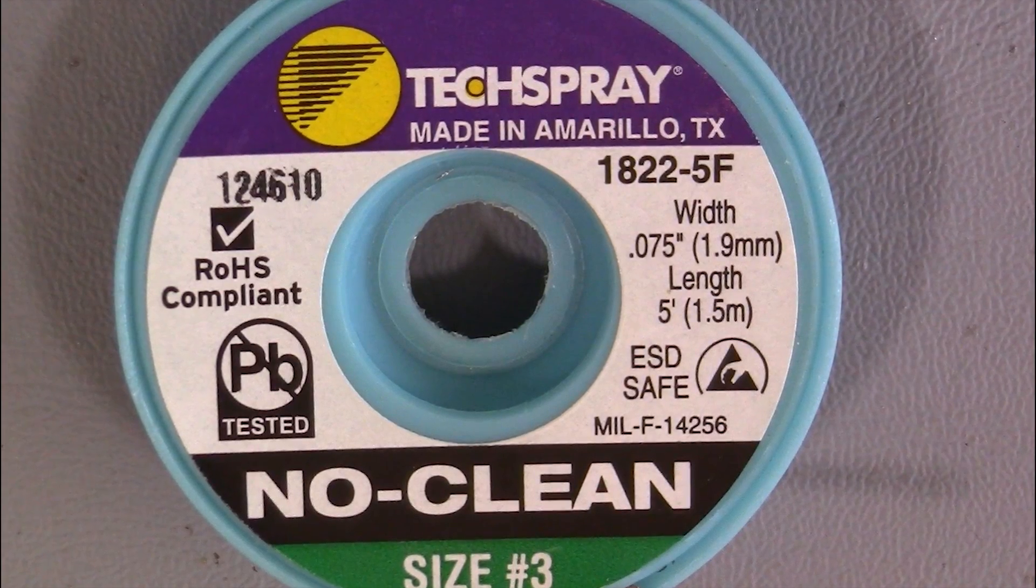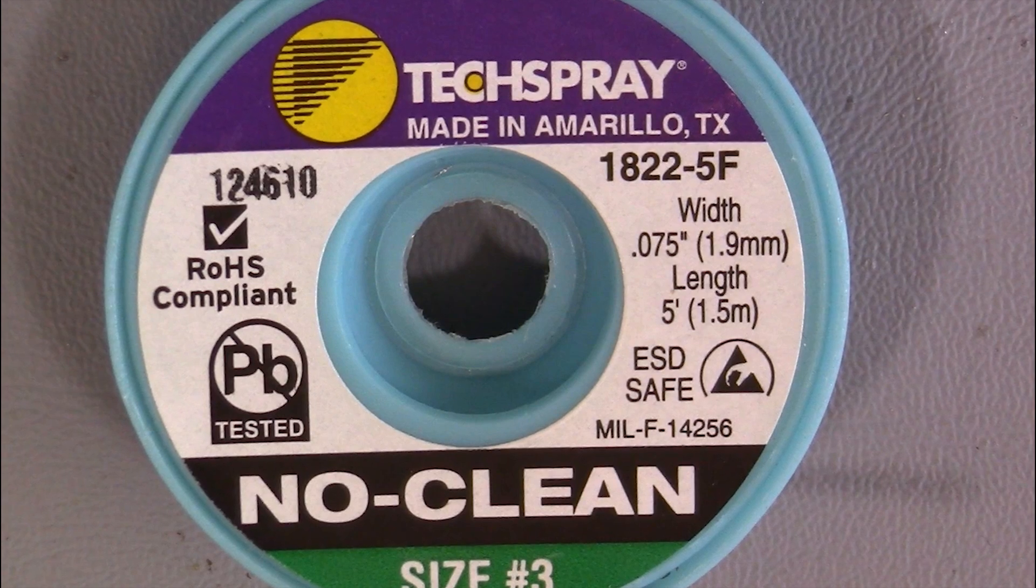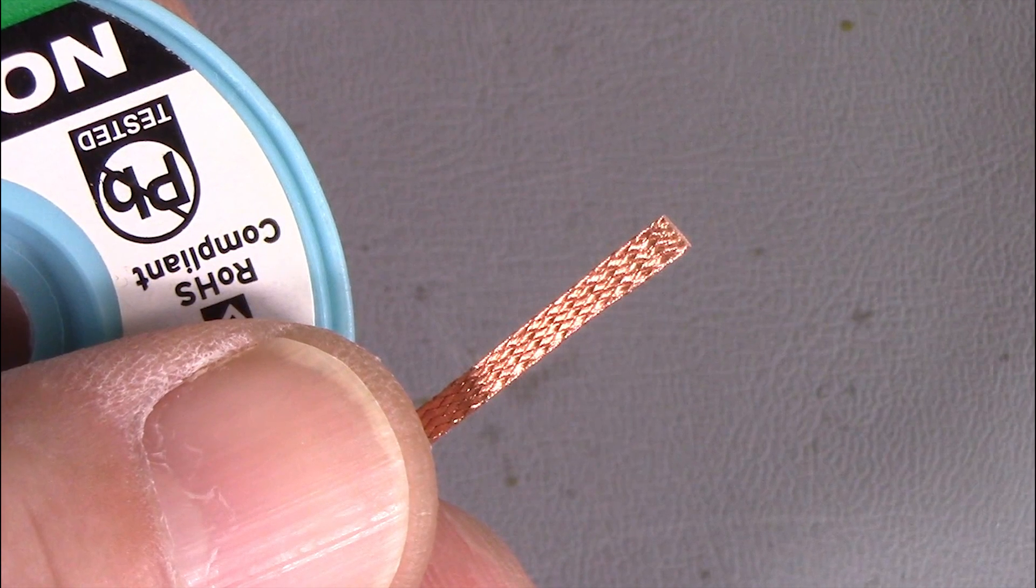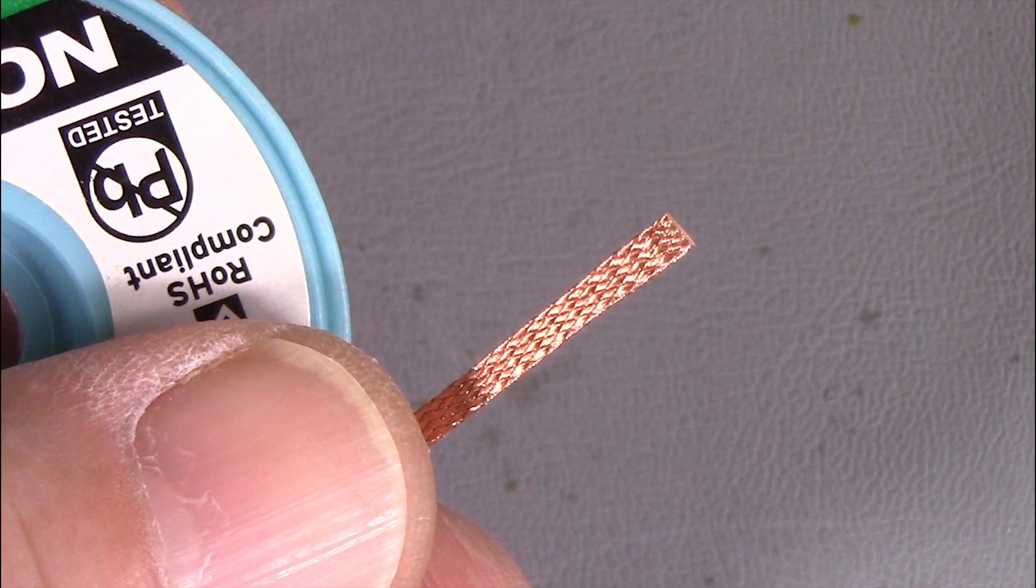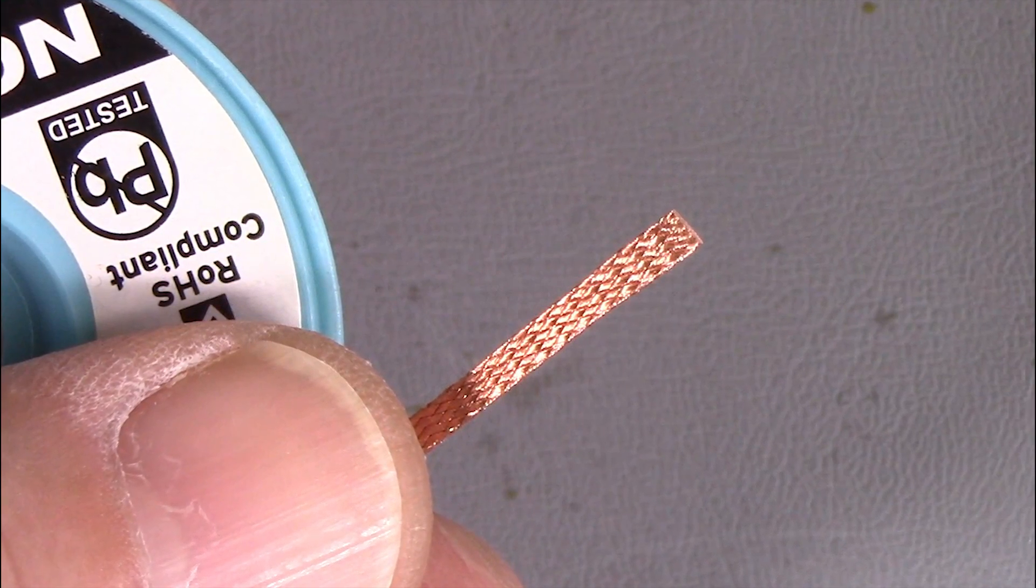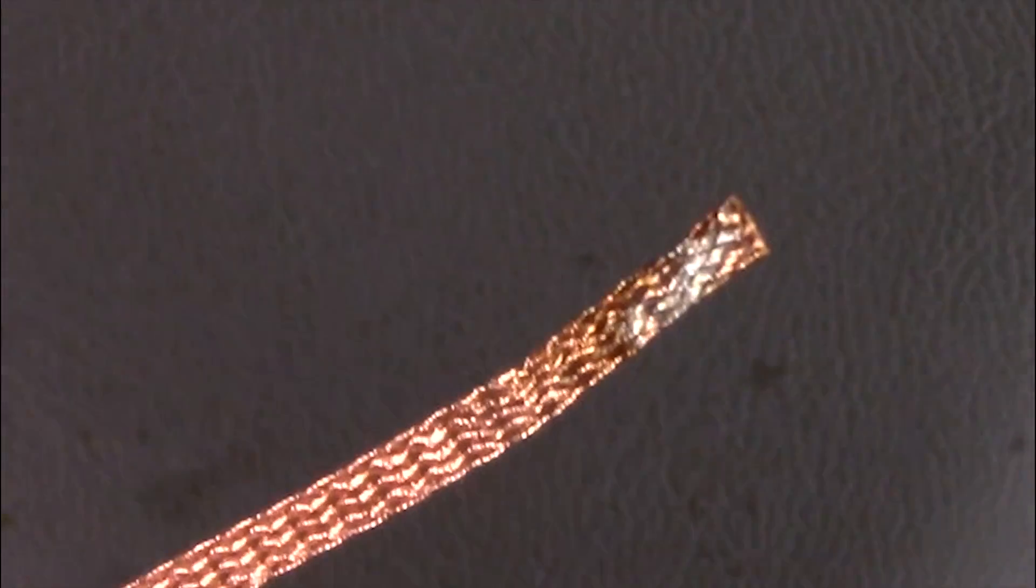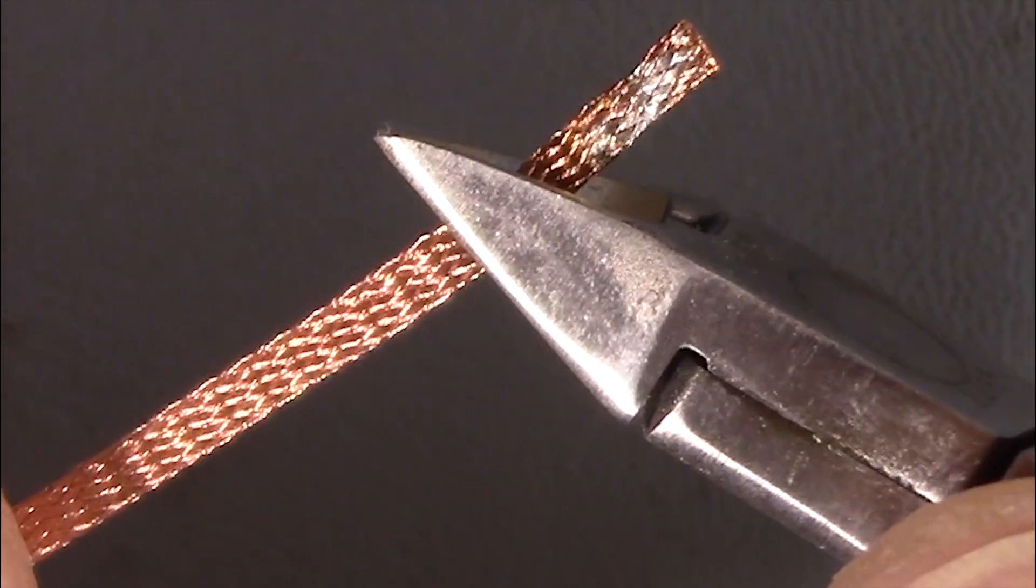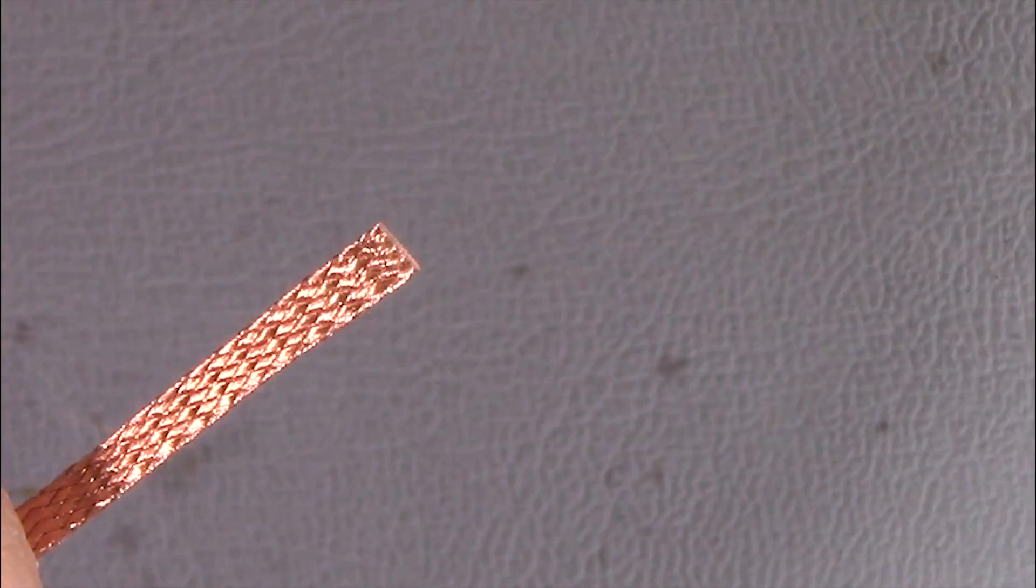We'll use solder wick to desolder one side of the resistors. Solder wick is just braided copper wire, usually with flux added. The wick will absorb the solder from the joint provided the wick is not loaded with solder already. If the wick has solder in it, you'll need to trim it off with wire cutters.